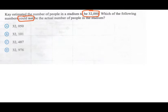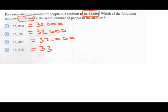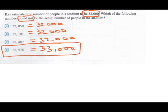If you are estimating, that means we are rounding off to the nearest thousand because we have thirty-two thousand. If we round off thirty-two thousand and fifty we'll get thirty-two thousand. Round off thirty-two thousand one hundred and one we get thirty-two thousand. Thirty-two thousand four hundred and eighty-seven we get thirty-two thousand. Thirty-two thousand nine hundred and seventy-six rounded off to the nearest thousand will give us thirty-three thousand. So it could not be D.